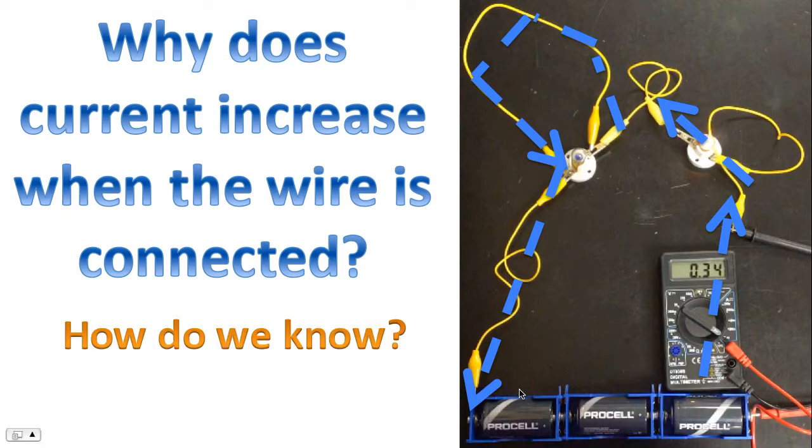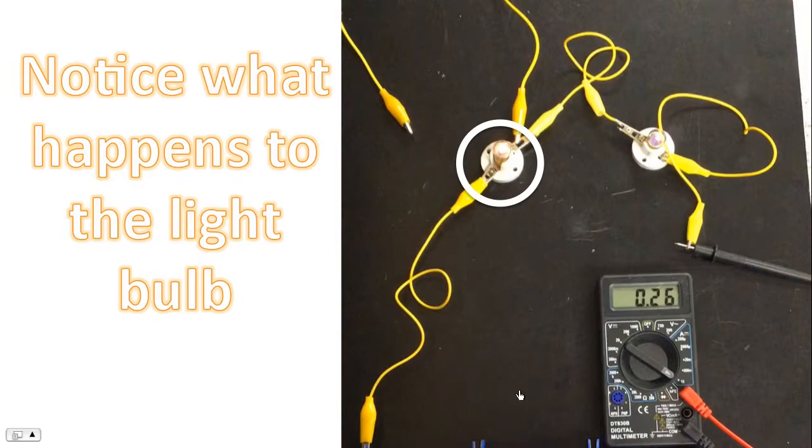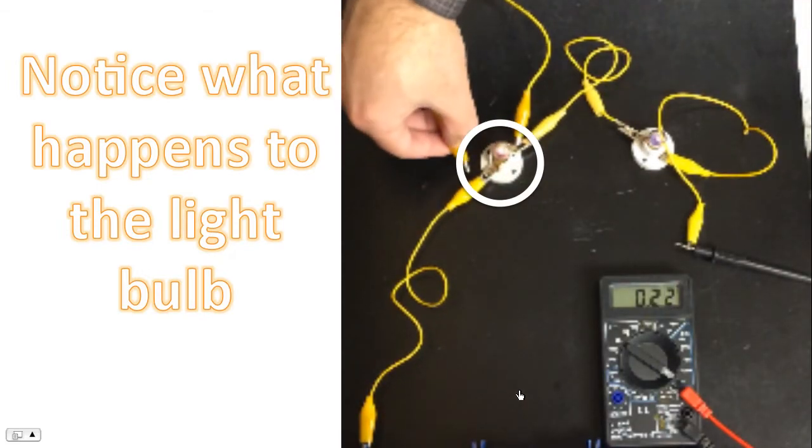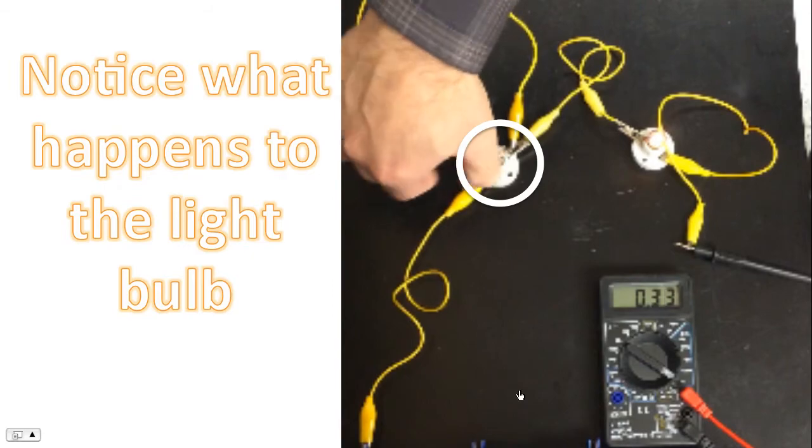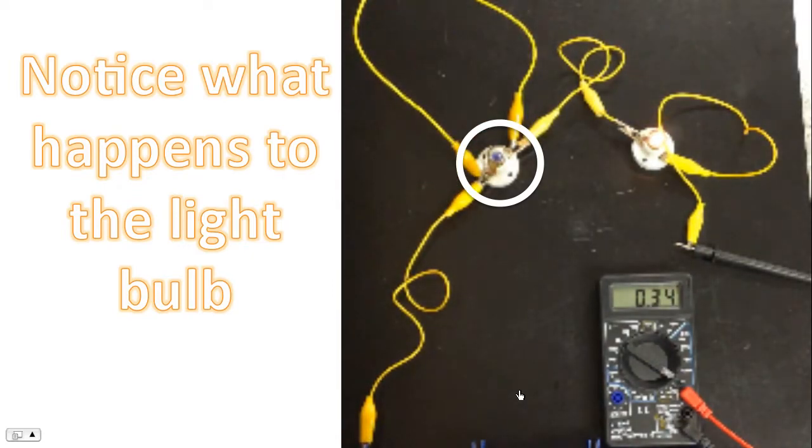So how do we know that the path effectively has bypassed the light bulb? Well, notice what happens to the light bulb. Let's take a look at the video one more time. We're going to connect the wire. And the light has disappeared. It's like the light bulb has been turned off by connecting a wire.